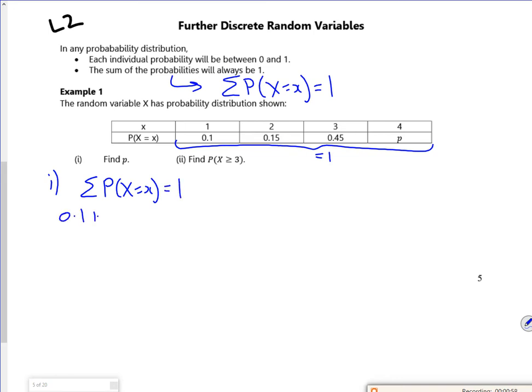If I add all of these up, it will equal one. So 0.1 plus 0.15 plus 0.45 plus p equals 1. So if I add that, that's 0.7 plus p equals 1. So p must be 0.3.